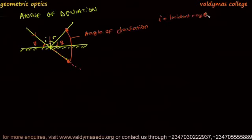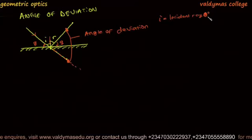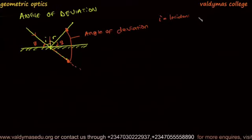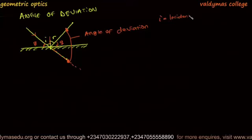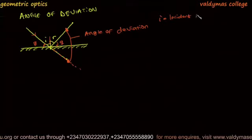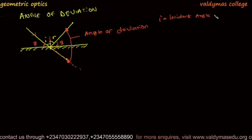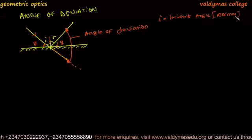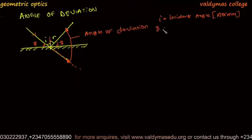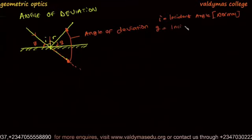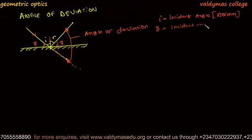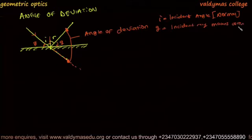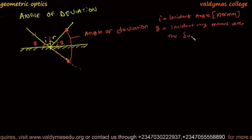I is the incident angle - the incident ray. This is the angle the incident ray makes with the normal. What you see, this G is the angle the incident ray makes with the surface of the mirror.